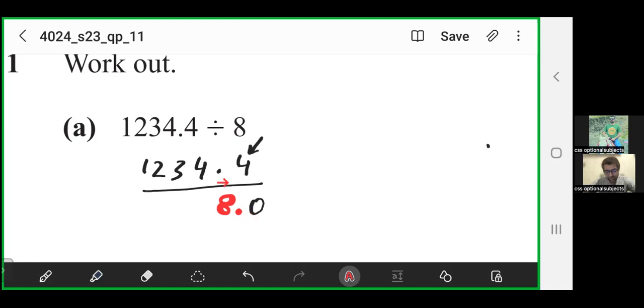Why? So that I can have equal numbers after the decimal. I have one number after the decimal in the numerator and I have one number after the decimal in the denominator. When numbers after decimal are equal, you can cancel the decimal.